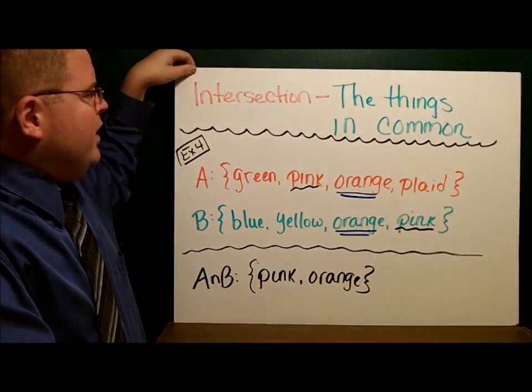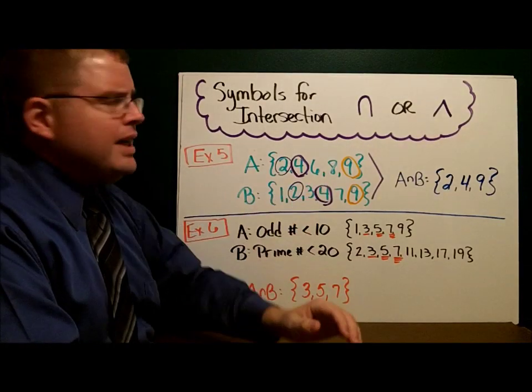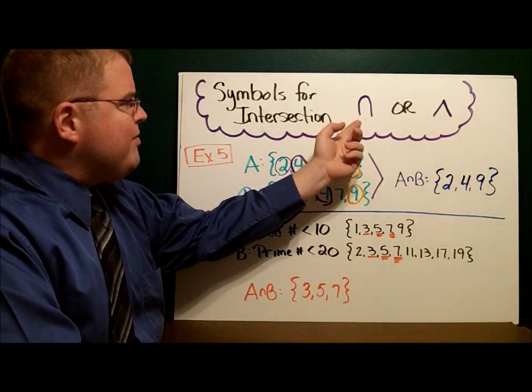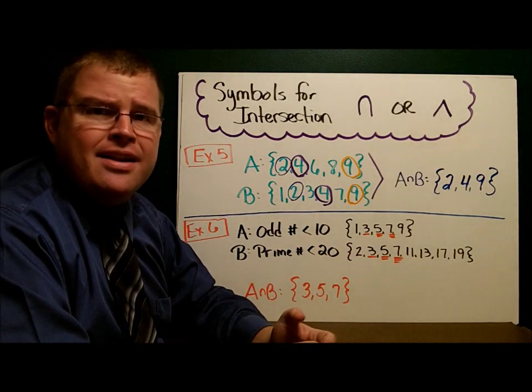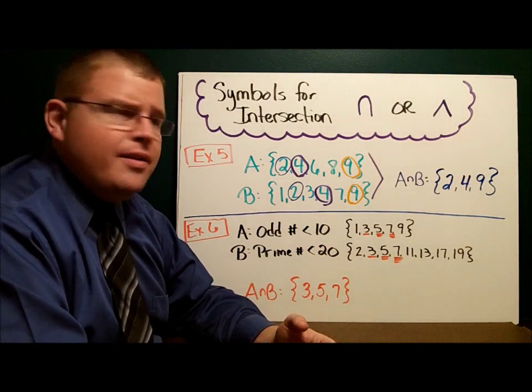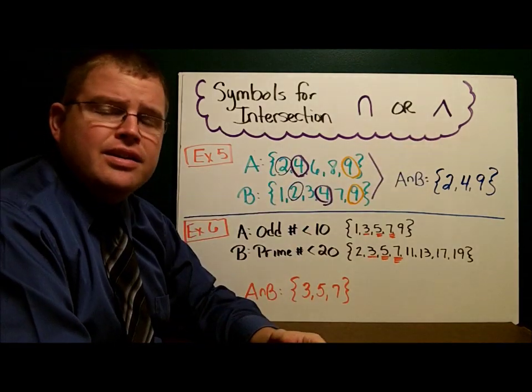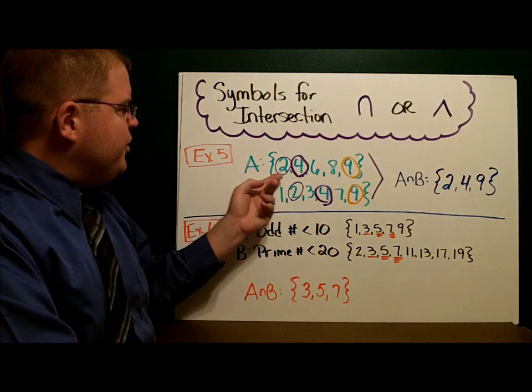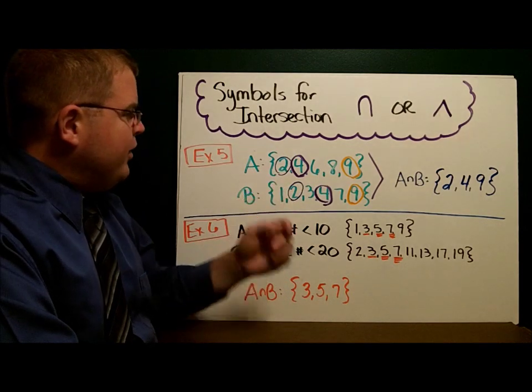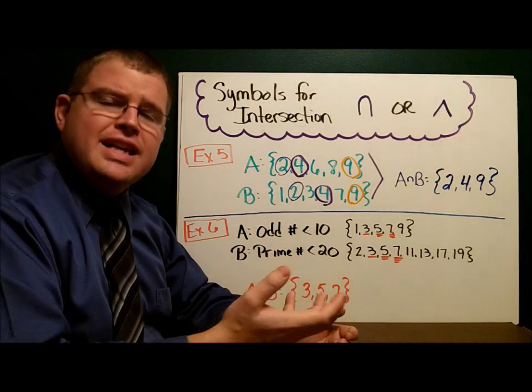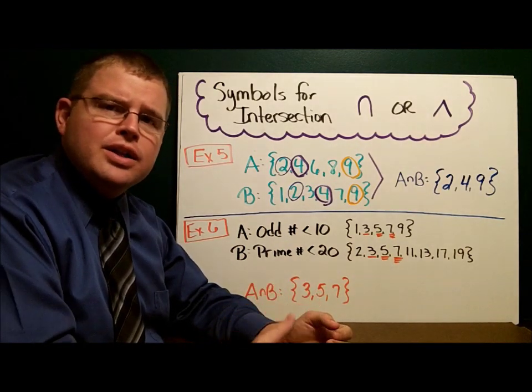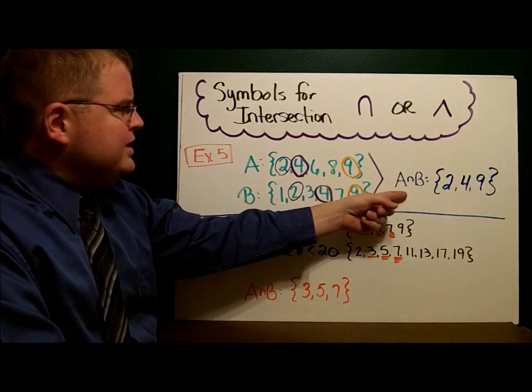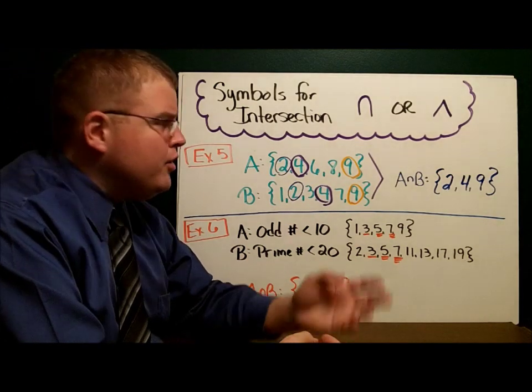The next example involves intersections using numbers. Just like we had symbols for unions, we have symbols for intersections. We have the upside down U, or the upside down V. Here we have 2, 4, 6, 8, 9 for set A. 1, 2, 3, 4, 7, 9 for set B. We want the intersection. They both have 2s, they both have 4s, they both have 9s. And so A intersect B is the set 2, 4, 9.